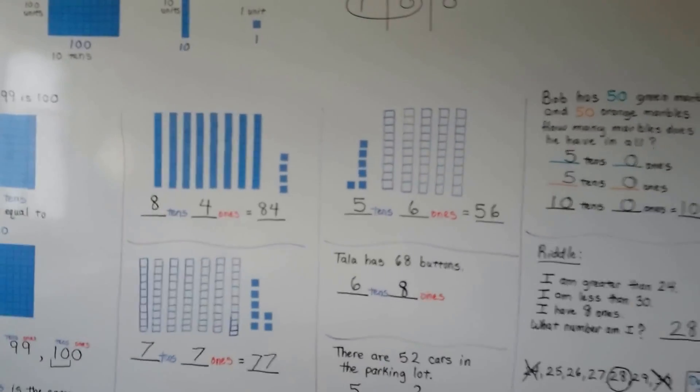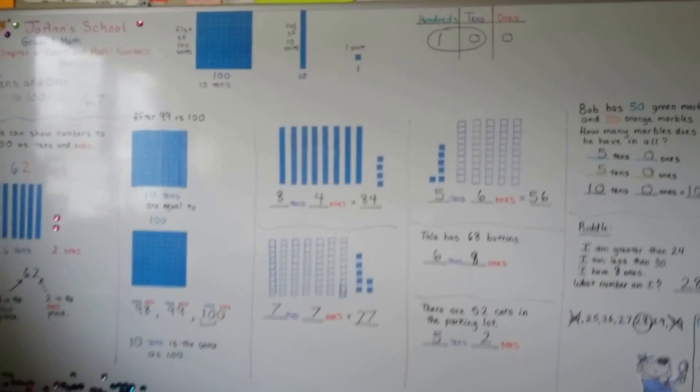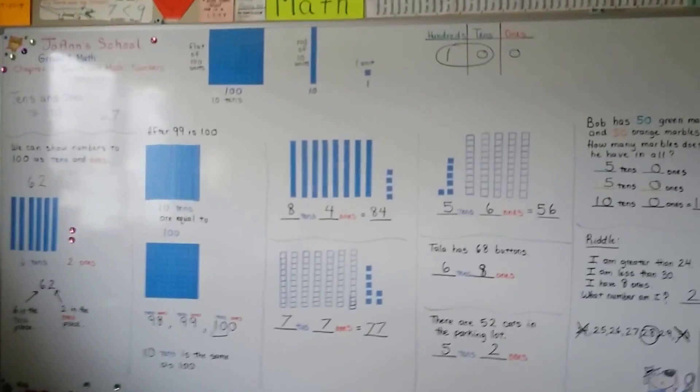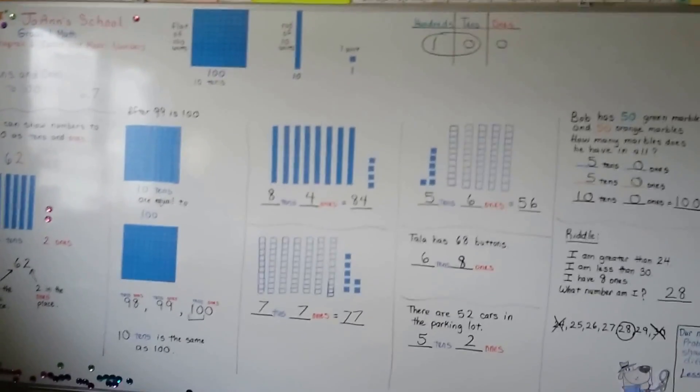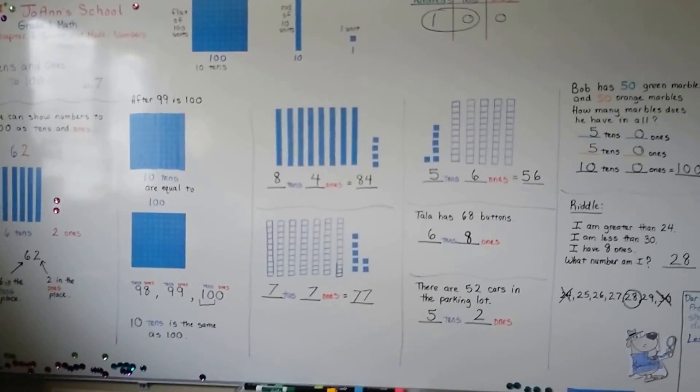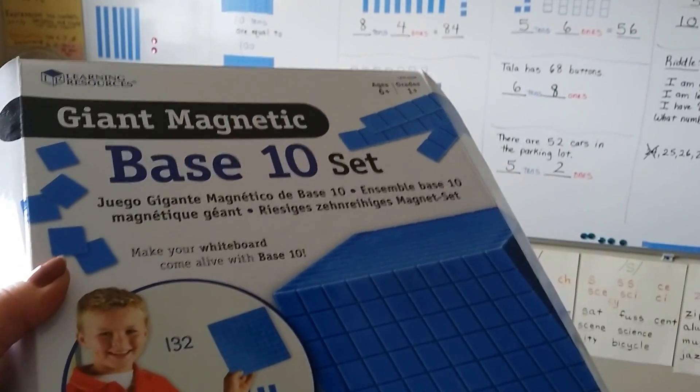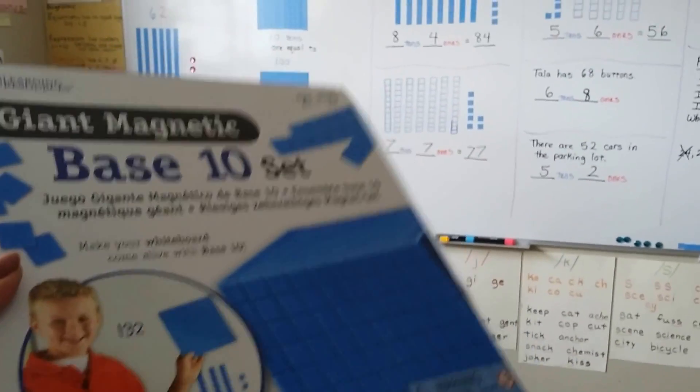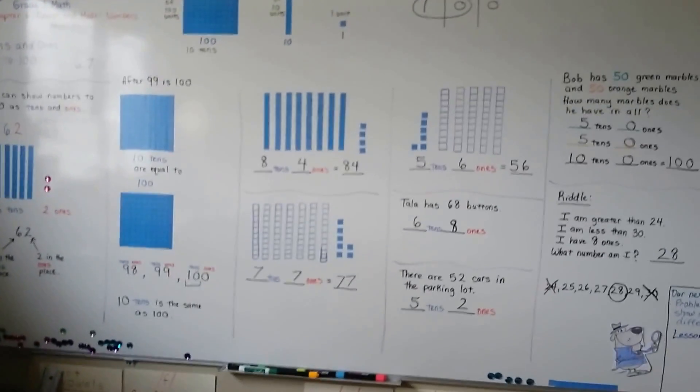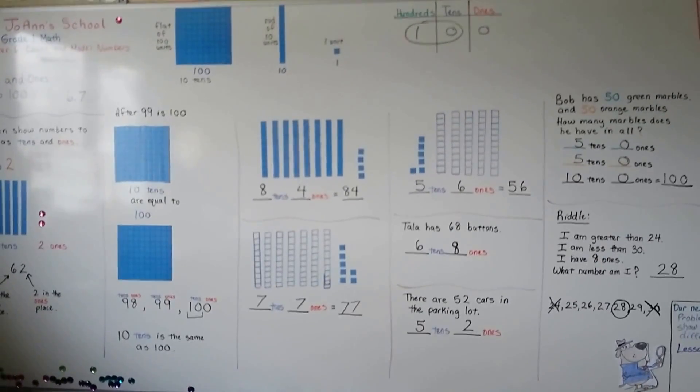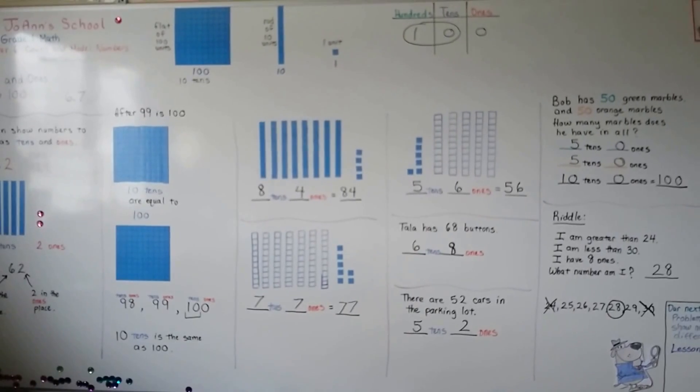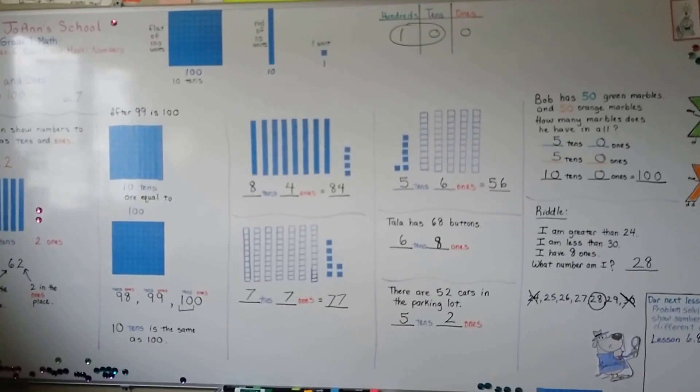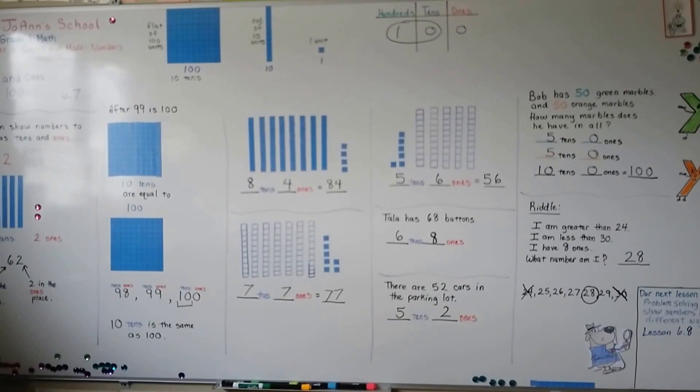I ran out of rods of 10 and I had to draw them. Teaching supplies are expensive and I only have one kit. Now, if you want to use these models, these are the ones that I'm using. They're by Learning Resources. They're called Giant Magnetic Base 10 Set. And I have a magnetic dry erase board, so magnets stick to it. And that is what I'm using for my models. You can buy them online from Learning Resources or you can buy them on Amazon. All right. I'll see you next time. Bye.